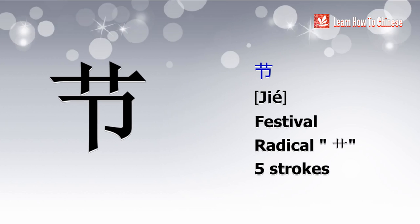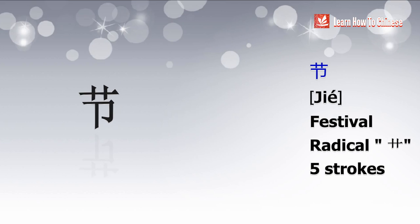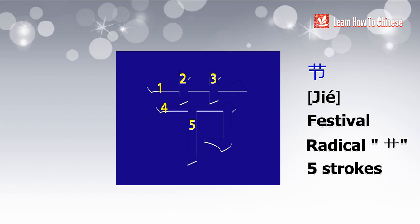The next character is 結. The radical is 草, meaning grass, and it has 5 strokes. Again, writing from top to bottom.